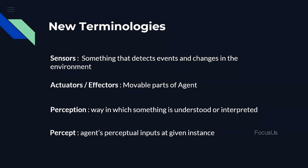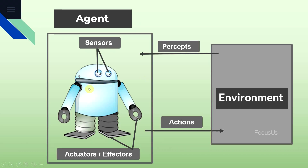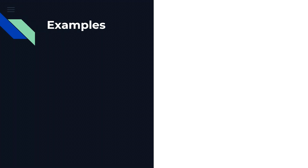Now that we know these terms, let's head back to the figure. Basically, our agent will perceive information from the environment through sensors, then process the information and make a decision. The actions are then taken in the environment through actuators. In this way our agent performs certain tasks.